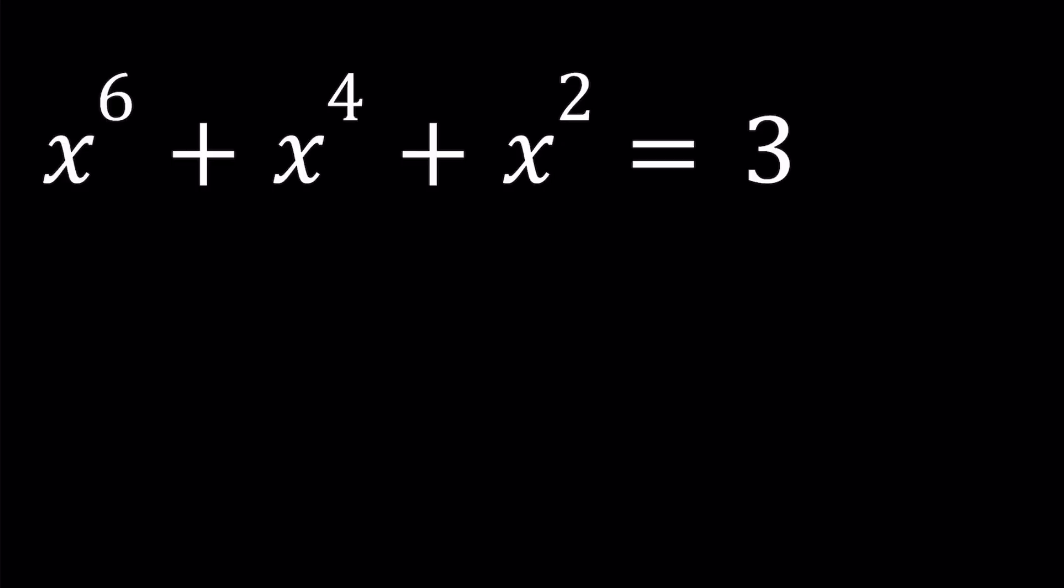That's very powerful because in the usual sense we can turn this into a cubic equation. So let's go ahead and set x squared equal to u. And now we're going to write x to the 6th as x squared cubed and x to the 4th as x squared squared. So we get the following equation: u cubed plus u squared plus u equals 3.